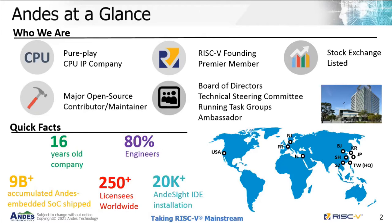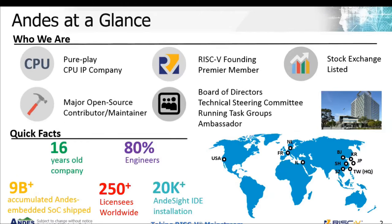Some quick facts about Andes: we are a 16-year-old company, 80% of our workforce are engineers, and until now there are a total of 9 billion-plus accumulated embedded cores shipped. For licenses, there are over 250 worldwide licenses, and for the IDE specifically, we have over 20,000 installations. We have our headquarters in Taiwan with offices across the globe — USA, Japan, Korea, China, France, Netherlands, and Israel.